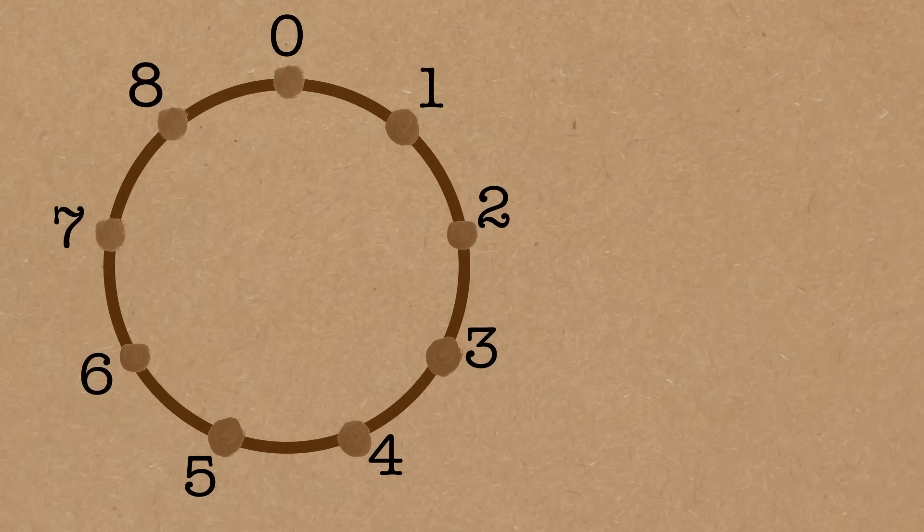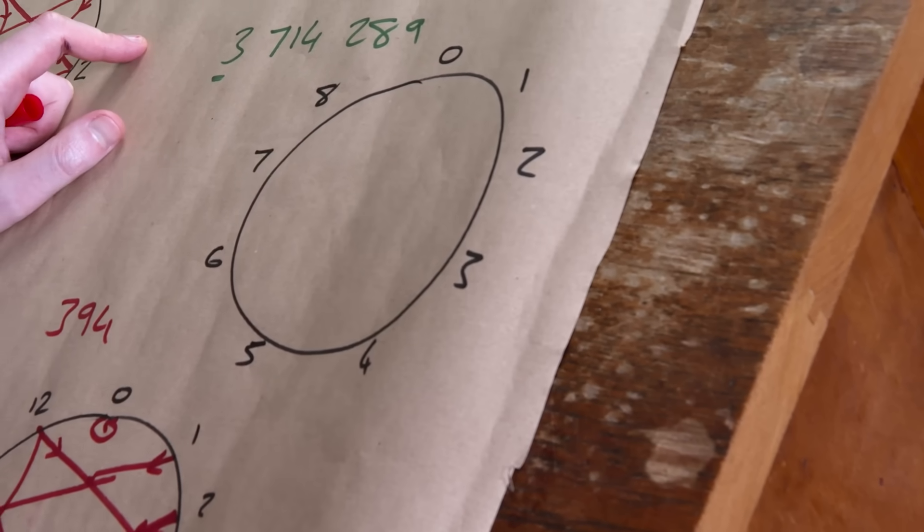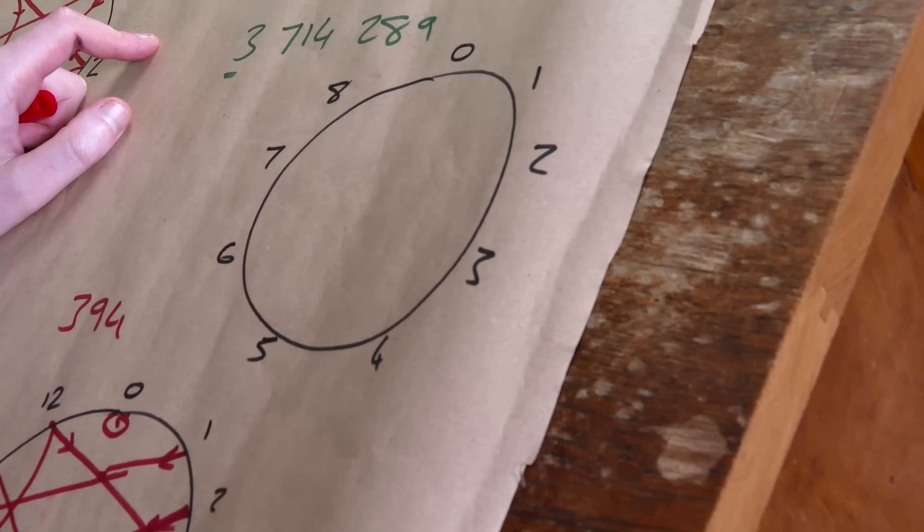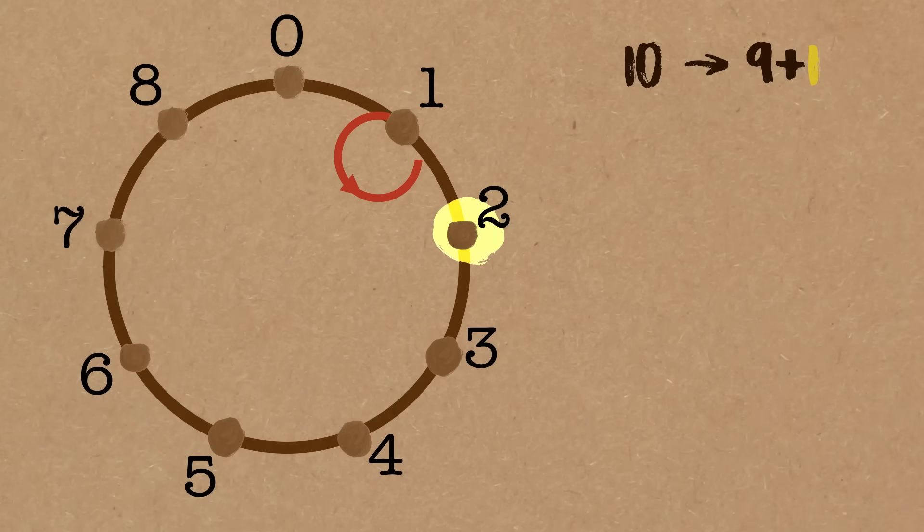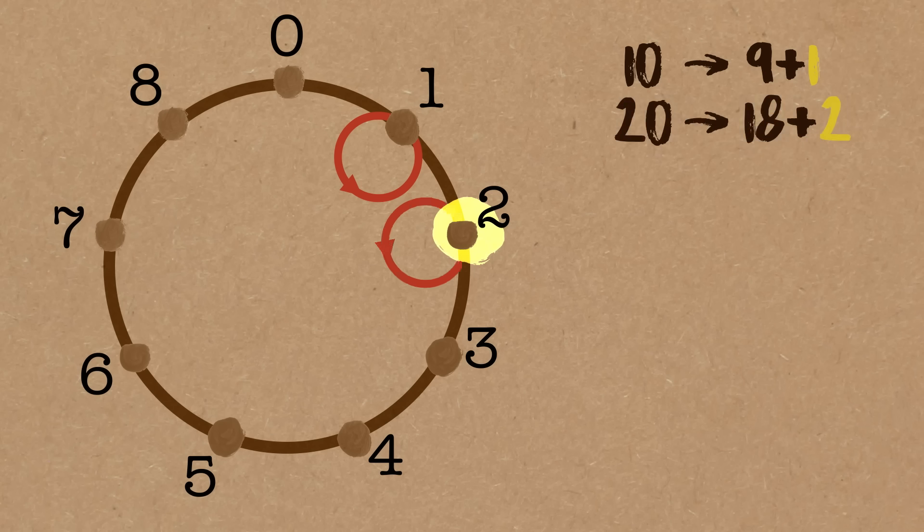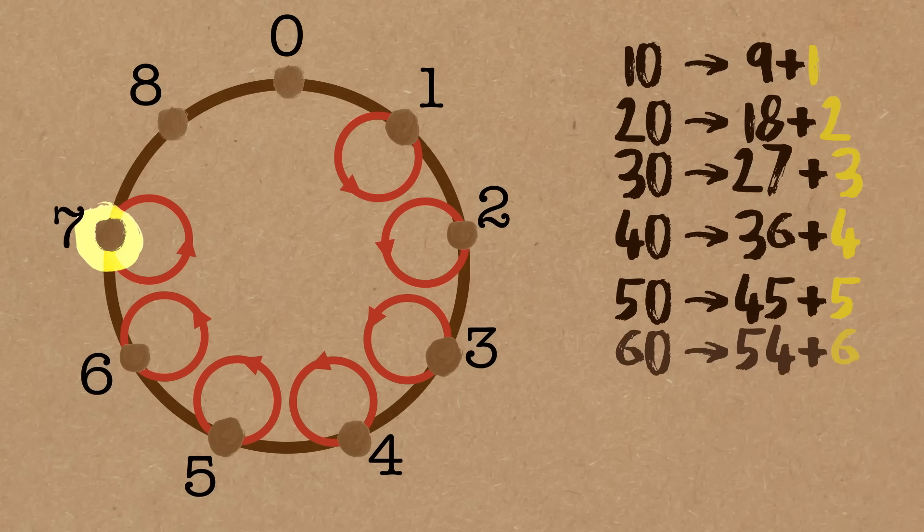So this is the division graph for nine. Same thing, we do our shortcut arrows. One times ten is ten, which is nine, and one left over. So actually, one actually goes back to itself. Two, if we did two, two times ten is twenty, which is eighteen, and two left over. So that actually goes back to itself. Three times ten is thirty, is twenty-seven, and three left over. And you can see that's going to be true all the way around. These numbers just go back to themselves, it's always true. So eight times ten is eighty, that's seventy-two plus eight left over, and then the zero always goes back to zero.